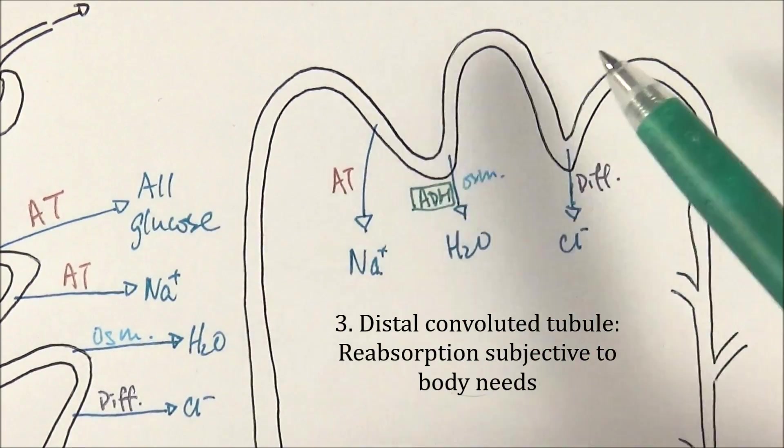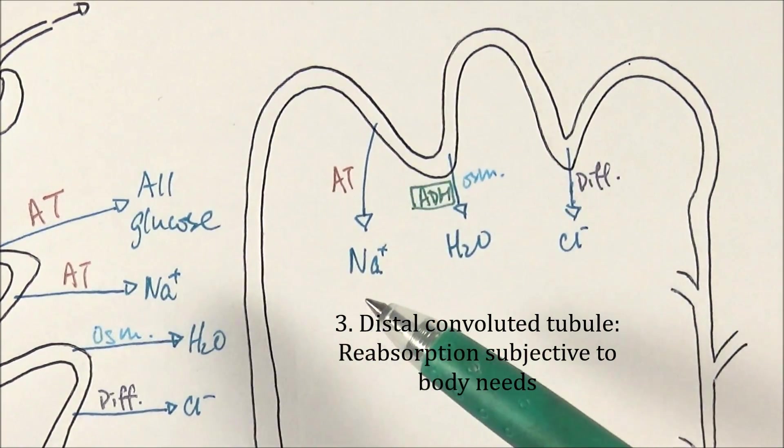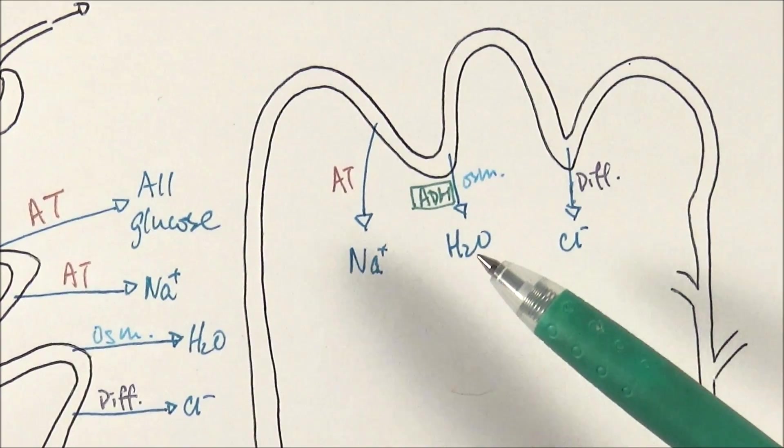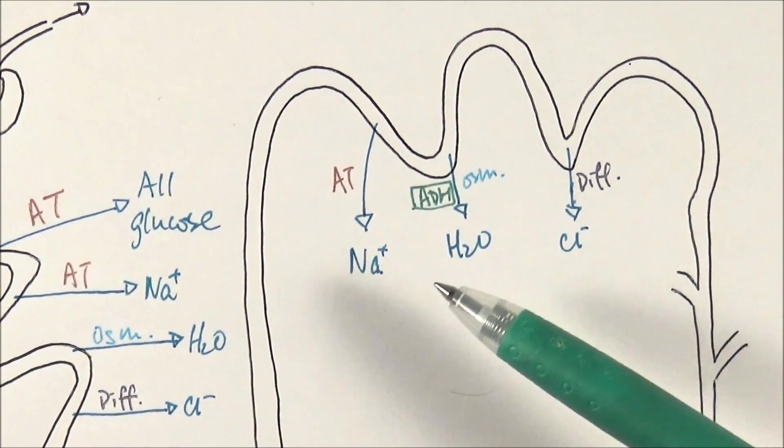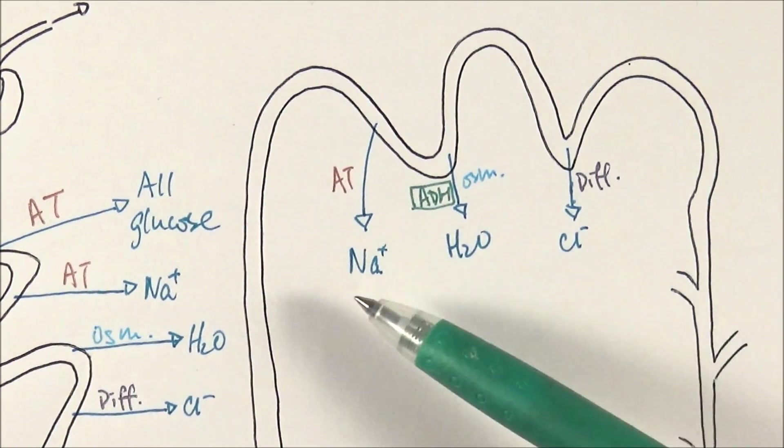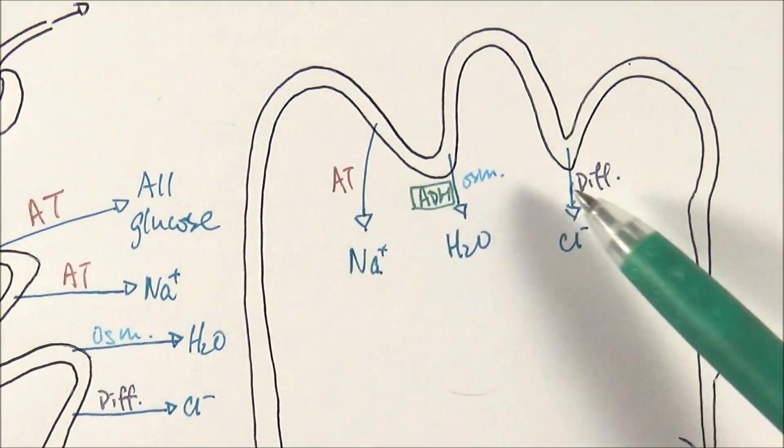So eventually we'll get to the distal convoluted tubule, as you can see here that I've already drawn out. At this case, the body will only reabsorb these things if the body needs it. So if the body needs more salt, then it will reabsorb these two ions by active transport and diffusion.